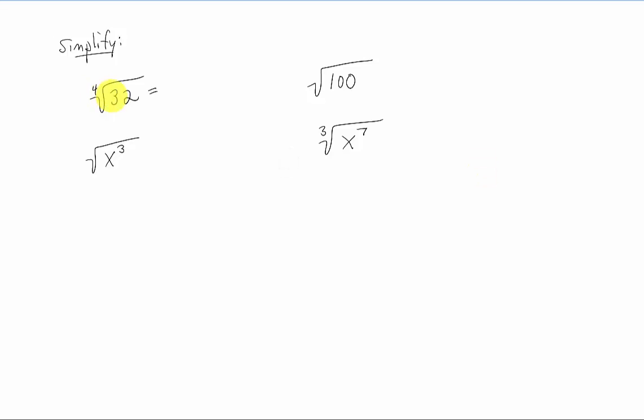First problem, we have a fourth root of 32, and you'll notice that our list of perfect fourths is 16. 32 is 16 times two. The fourth root of 16 is two. The fourth root of two, we can't simplify any further, so you just have to leave it as is.